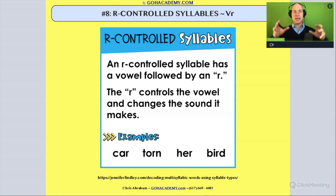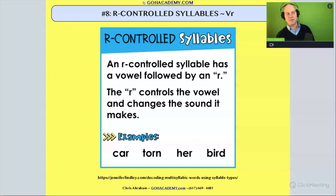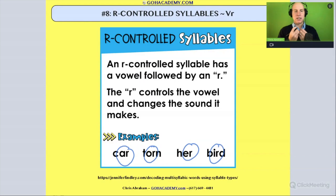Let's focus in on the controlled r syllable pattern in phonics. Sometimes we say controlled r — this is when we have that r, like in car, torn, her, or bird. What it's doing is the controlled r is modifying the vowel sound.